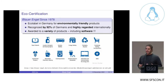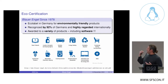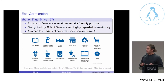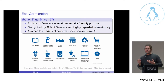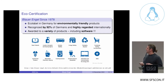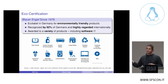So what is Blauer Engel? It's a German eco-label for environmentally friendly products — the oldest in the world, since 1978. It's recognized by 92% of Germans and highly regarded internationally, and it's awarded to a variety of products. Most Germans immediately think of paper, but it's also awarded to laundry detergents, cleaning services, construction products, and since last year, also software.